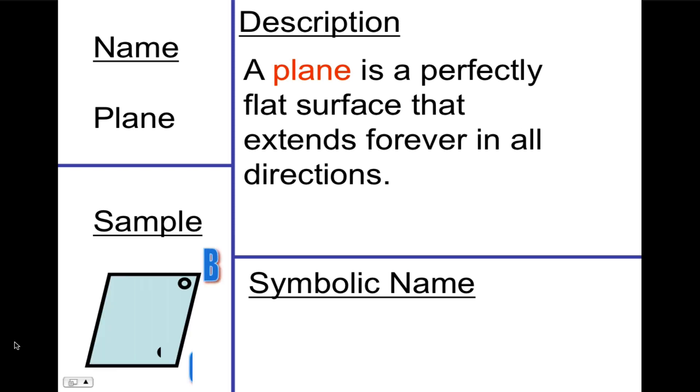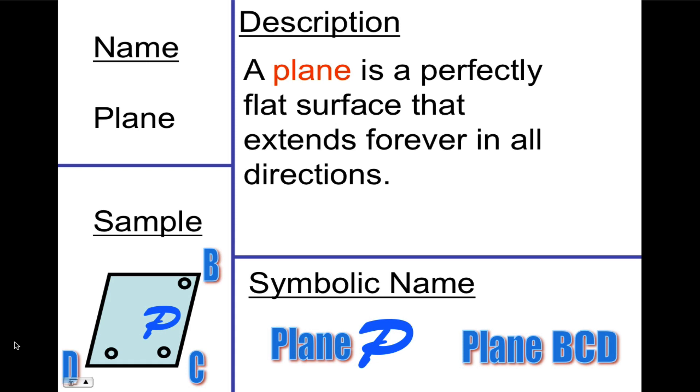A sample would look very much like a parallelogram because there's no way to show that it goes on forever. So when we name it, we have to say that it's a plane. And we would call that plane P. Or we could call it with three letters, plane BCD. And it needs to have three letters that are not linear, that are not in a straight line.